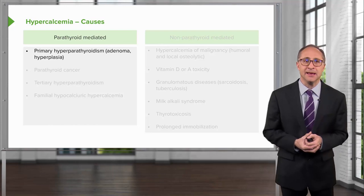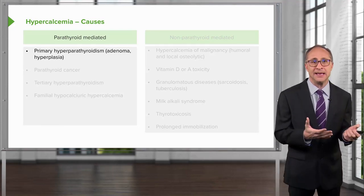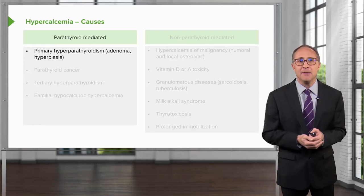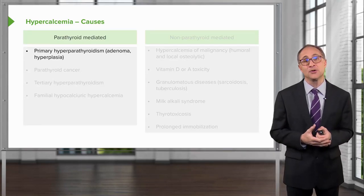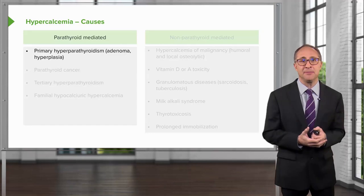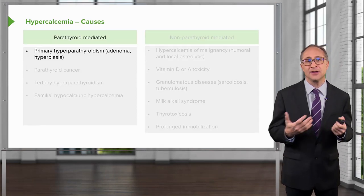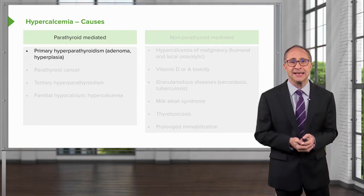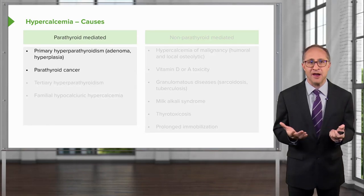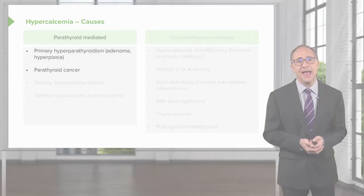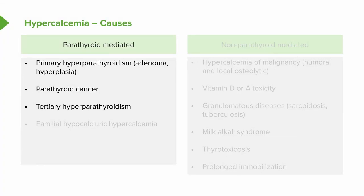The causes of hypercalcemia can be divided into parathyroid-mediated and non-parathyroid-mediated. Parathyroid-mediated causes are those caused by elevations in parathyroid hormone. Primary hyperparathyroidism, usually caused by an adenoma or hyperplasia of the parathyroid gland, is the most common cause. Parathyroid cancers, although very rare, may also cause it. Tertiary hyperparathyroidism is a rare condition occurring in patients with chronic kidney failure, and the even rarer familial hypocalciuric hypocalcemia will be discussed later.